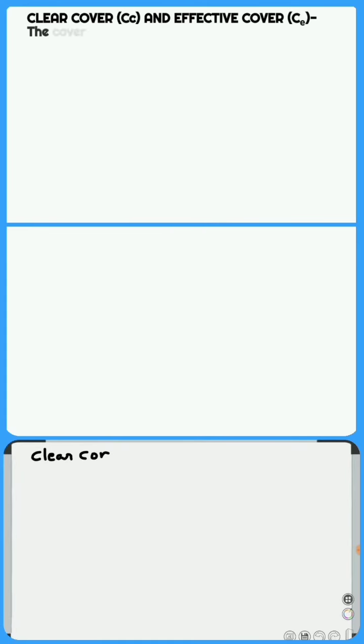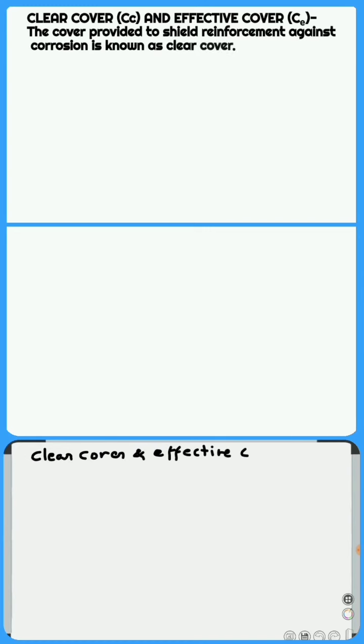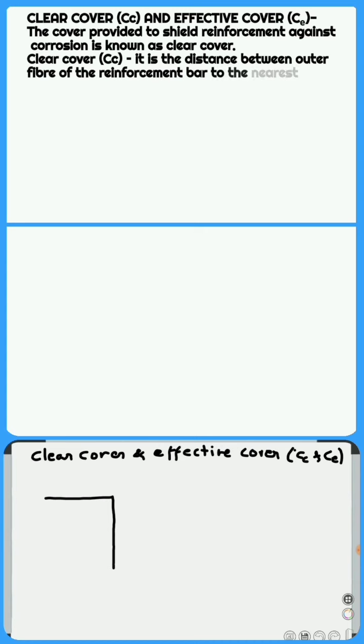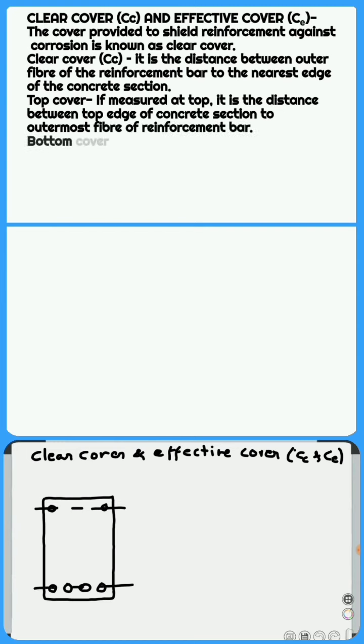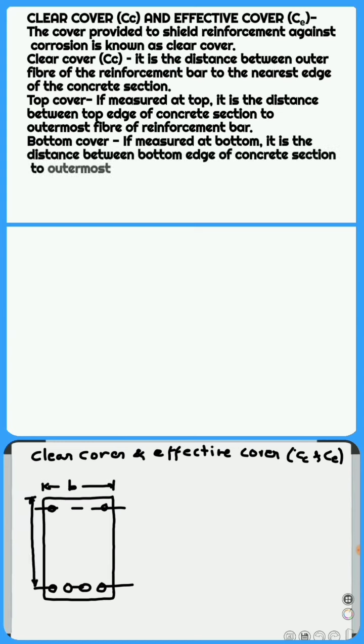Clear cover Cc and effective cover Ca. The cover provided to shield reinforcement against corrosion is known as clear cover. The following clear covers are usually taken as per the type of structural member. Clear cover Cc.